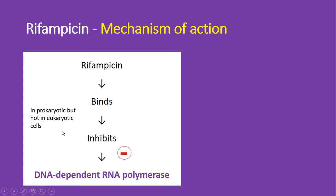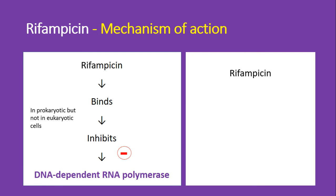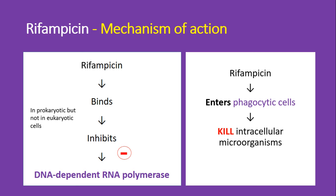Apart from this, rifampicin also enters into the phagocytic cell where it kills the intracellular microorganisms, including the tubercle bacillus. But remember, the major mechanism of rifampicin is inhibition of the activity of the DNA-dependent RNA polymerase.